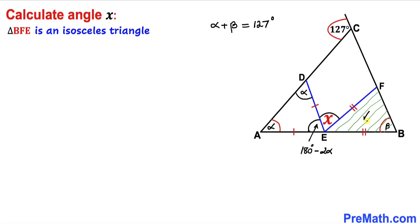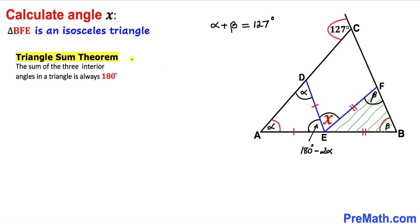Now let's focus on triangle BFE. We know this is an isosceles triangle as well, since EB equals EF. So if this angle is beta, this angle must be beta as well. Applying the triangle sum theorem, this third angle equals 180 degrees minus 2 beta.